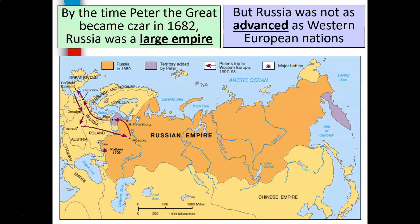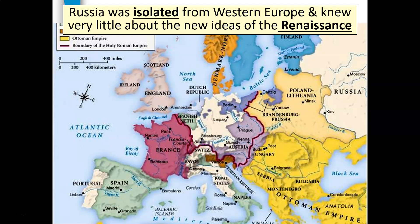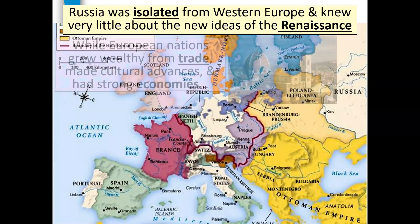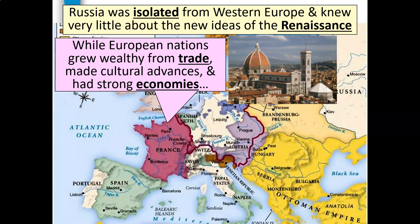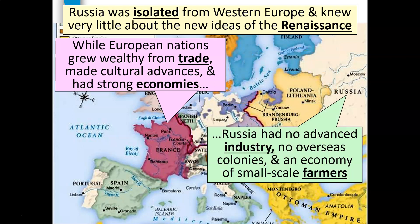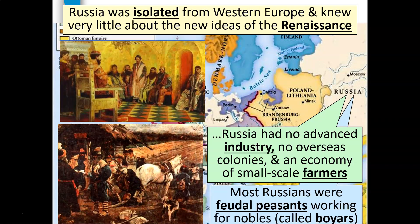Over time, czars expanded Russia's borders and increased their power over the nobles, creating an absolute monarchy. By the time Peter the Great became czar in 1682, Russia was a large empire but was not as advanced as Western European nations. One reason was Russia's isolation — it was isolated from Western Europe and knew very little about the new ideas of the Renaissance. While European nations grew wealthy from trade, made cultural advances, and had strong economies, Russia had no advanced industry, no overseas colonies, and an economy of small-scale farmers. Most Russians were feudal peasants working for nobles, which limited Russia's economic growth.